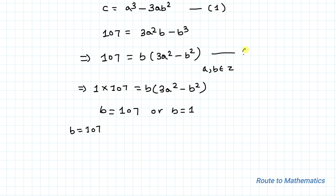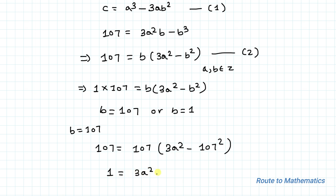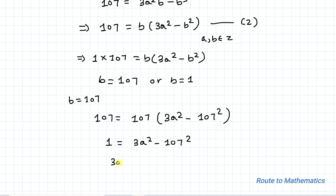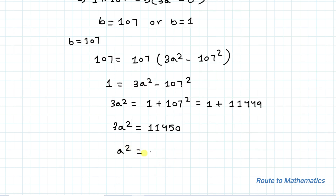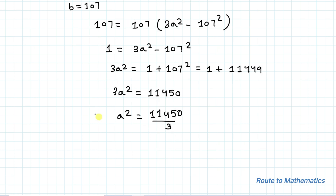First, applying b equals 107 in equation 2: 107 equals 107 times 3a squared minus 107 squared, which gives 1 equals 3a squared minus 107 squared. So 3a squared equals 1 plus 107 squared equals 11449, meaning a squared equals 11450 divided by 3. Since 11450 is not divisible by 3, b equals 107 cannot be the solution.